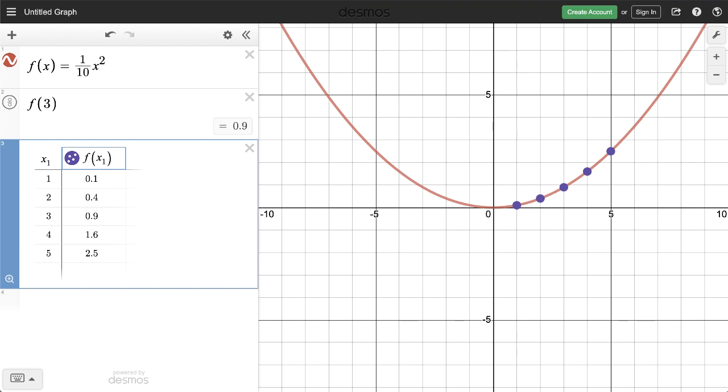Naming functions can be particularly helpful when exploring transformations, whether complex ones or simple ones like translating this parabola up one unit. To do so, just add a third column in our table with this header, f(x)+1.